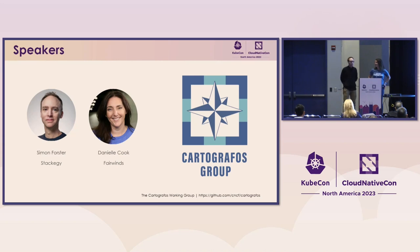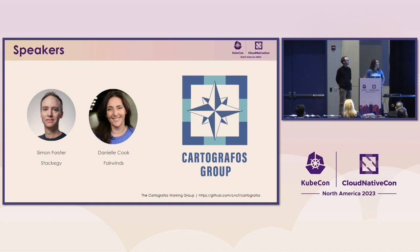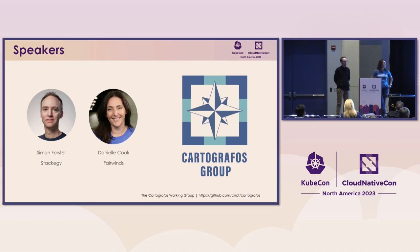My name is Simon Forster, and I'm a co-chair of the Working Group, and I'm a technical architect in financial services. And I'm Danielle Cook. I'm also a co-chair of the KatoGraphos Working Group. I run a virtual event called Kube Crash, which promotes a bunch of open-source technologies — that will be happening in a few months. And I'm a VP at Fairwinds.